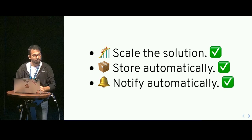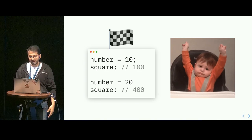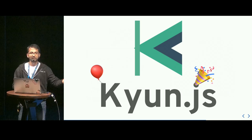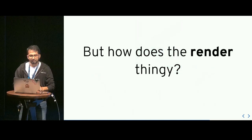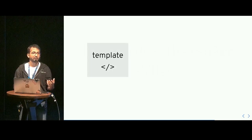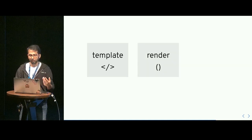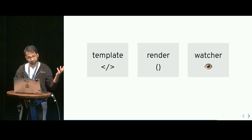So here we are — we have pretty much solved it. But what does this have to do with the render function and templates? If you think about it, templates are just an abstraction that get converted to a render function. That render function depends on component data. When we pass that function through our watcher, all the dependency collection happens, and whenever component data changes, the render function is called automatically and our UI is updated.